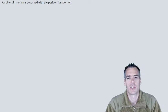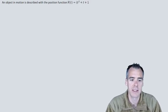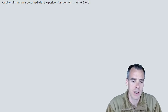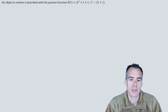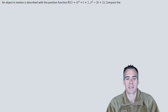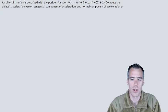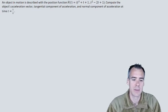Here is our problem statement. An object in motion is described with the position function r(t) = (t³ + t + 1, t² - 2t + 1). Compute the object's acceleration vector, tangential component of acceleration, and normal component of acceleration at time t = 1/2.